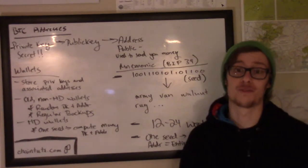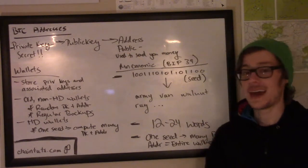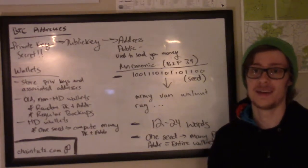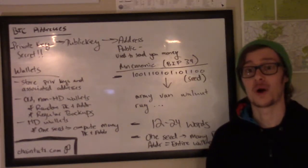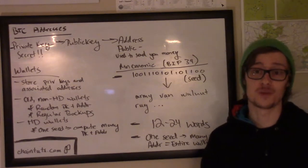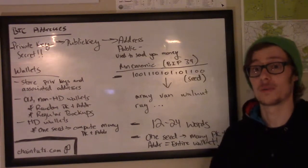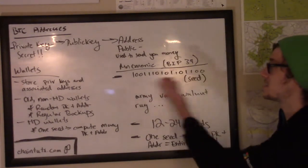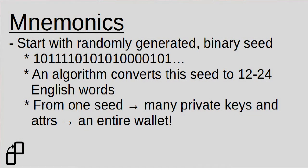Now this is obviously much better for backups than the old non-deterministic generated wallets, but it's pretty hard to remember some giant string of binary or write it down somewhere without making a mistake. So Bitcoin developers took this one step further and generated a system called mnemonics. This was introduced, for you Bitcoin nerds, in a proposal called BIP39 or Bitcoin Improvement Proposal number 39. This uses a special algorithm to take this binary seed — some large randomly generated private number — and turn it into an English set of words, from 12 to 24 words.